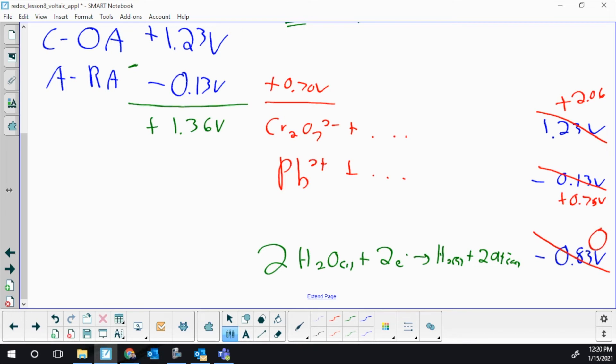So this is 0.70 above our new reference; this is a little over 2 volts above our new reference. We just reset this scale.